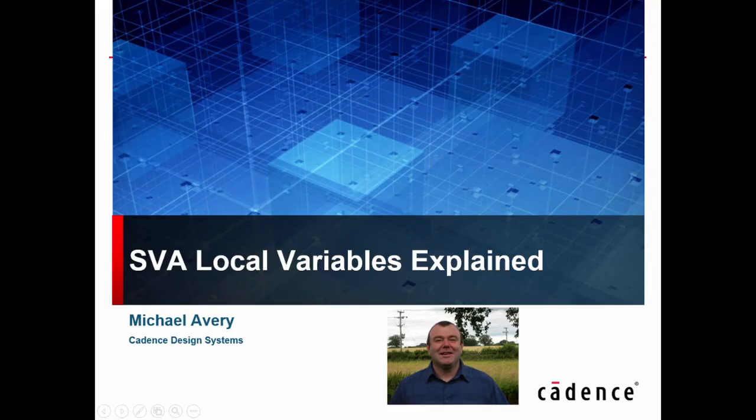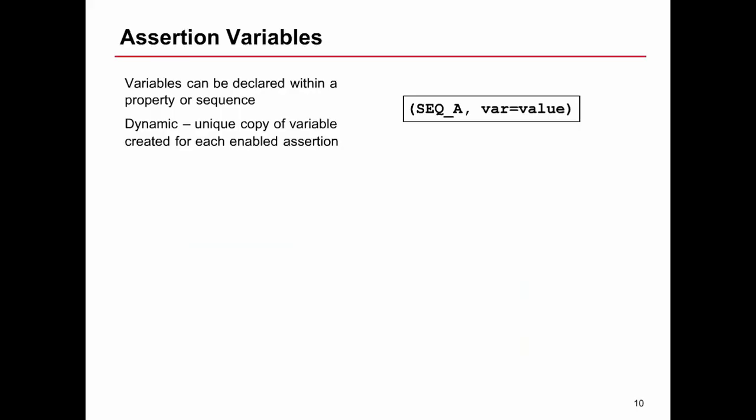In this video we're going to see how local variables can be used in SVA properties and one example of where they're useful. When we define a property, we can define it with local variables - that is, variables declared locally inside of the property. This provides a dynamic unique copy which is created for each copy of the property being evaluated.